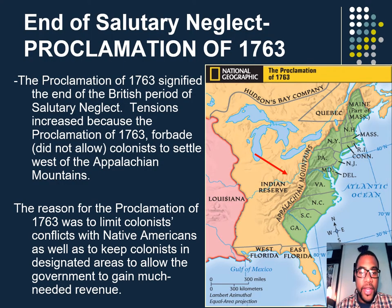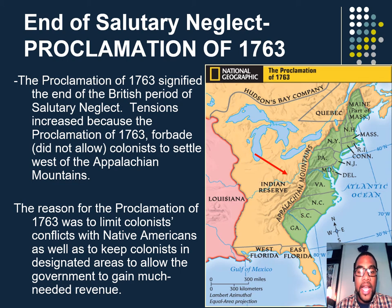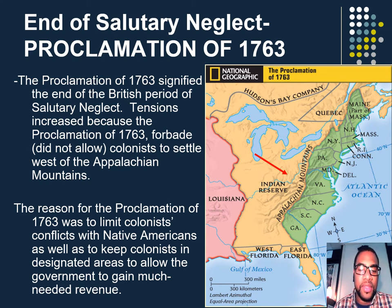End of salutary neglect — the Proclamation of 1763. The Proclamation of 1763 signified the end of the British period of salutary neglect. Tensions increased because the Proclamation of 1763 forbade colonists from settling west of the Appalachian Mountains. The reason for the proclamation was to limit colonists' conflict with Native Americans, as well as to keep colonists in designated areas to allow the government to gain much-needed revenue.